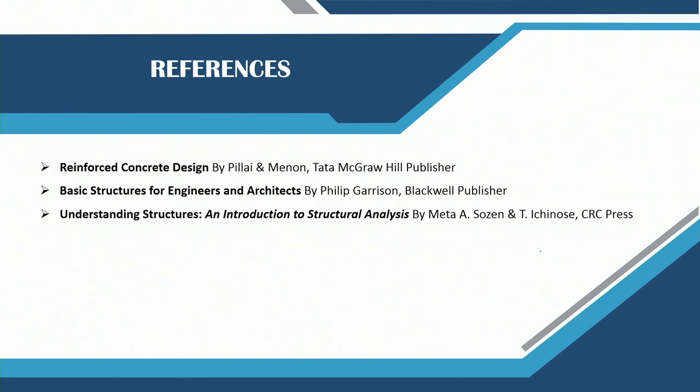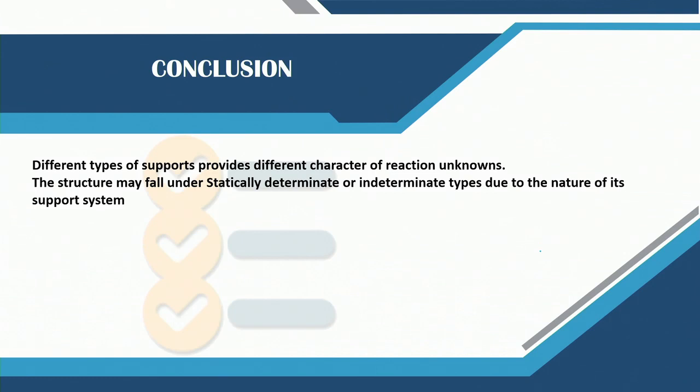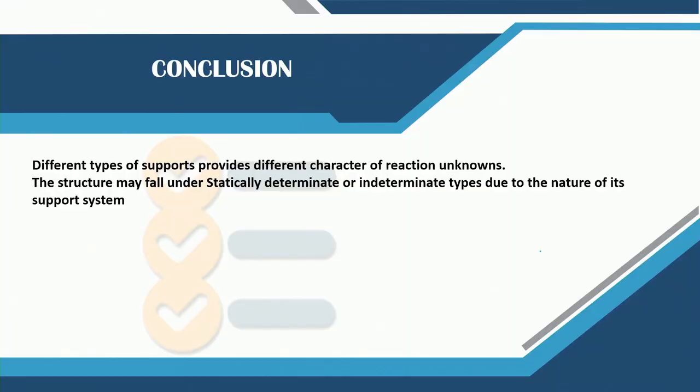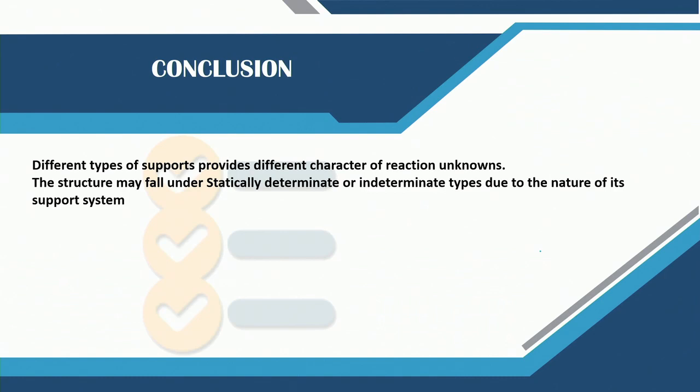In conclusion, different types of support provide different characters of reaction. The hinge support and fixed support give different characters, but the fixed support always has 3 reactions: one upward, one horizontal, and one moment. Some supports have moment = 0, some have horizontal reaction = 0. Based on the nature of supports we can determine degrees of freedom, number of unknowns, and whether the structure is statically determinate or indeterminate.